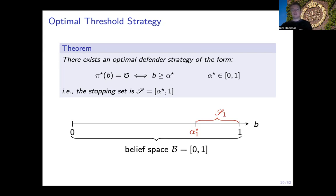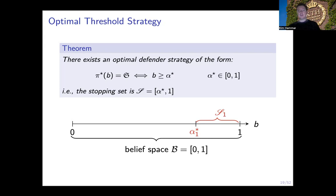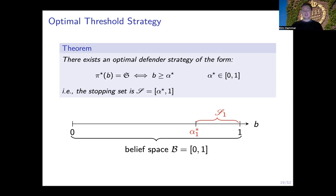This theorem states that the optimal strategy for the defender is to monitor the infrastructure, collect the alerts, update the belief of intrusion, and when the belief of intrusion reaches some threshold point alpha, trigger the response. The nice thing about this strategy is that it can be very efficiently implemented in a real system — it's essentially around 50 lines of code that you run on top of your intrusion detection system to decide when to trigger the response. The drawback, however, is that it's a bit too simple.